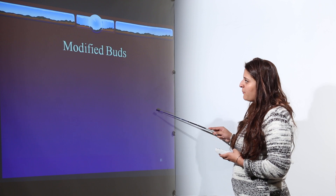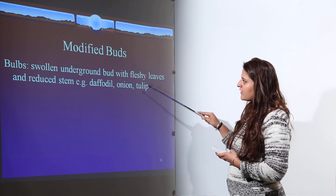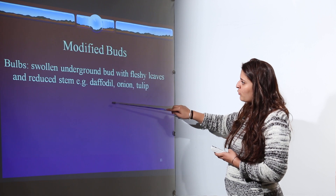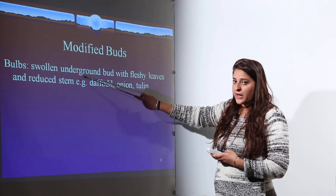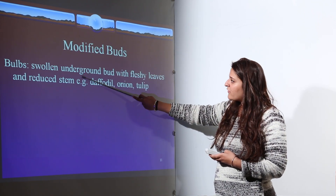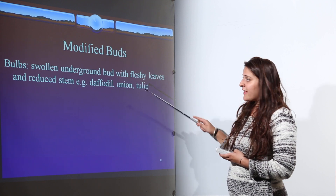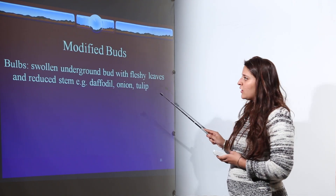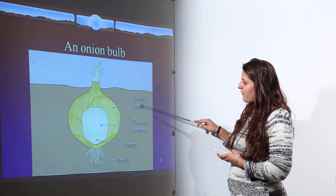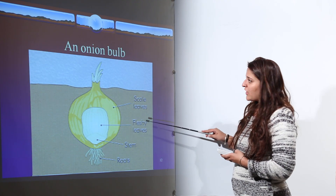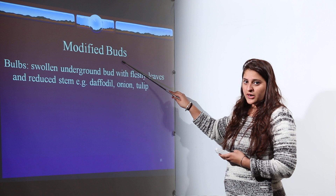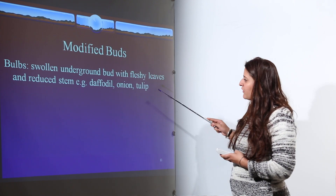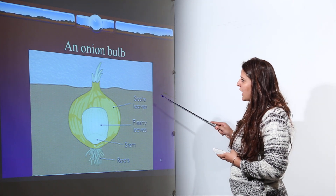Next is the modification of buds. In onion, a swollen underground bud with fleshy leaves and a reduced stem grows into a complete plant. This is an example of a modified bud structure, which also occurs in daffodil and tulip plants.